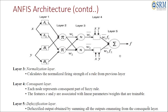Finally in layer 5, defuzzification of the fuzzified input into a crisp output takes place. So the combination of neuron layers as well as fuzzy rules — where the fuzzy rule base, fuzzy membership values, fuzzification, and defuzzification are all present — gives us the combination of both, and hence the name Adaptive Neuro Fuzzy Inference System. Thank you.